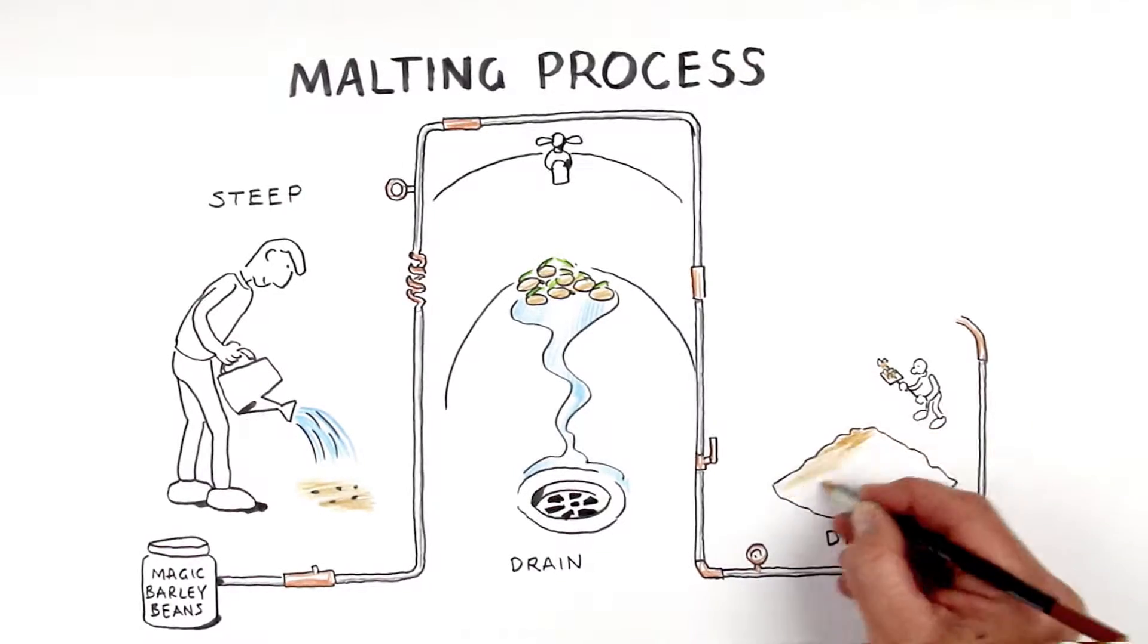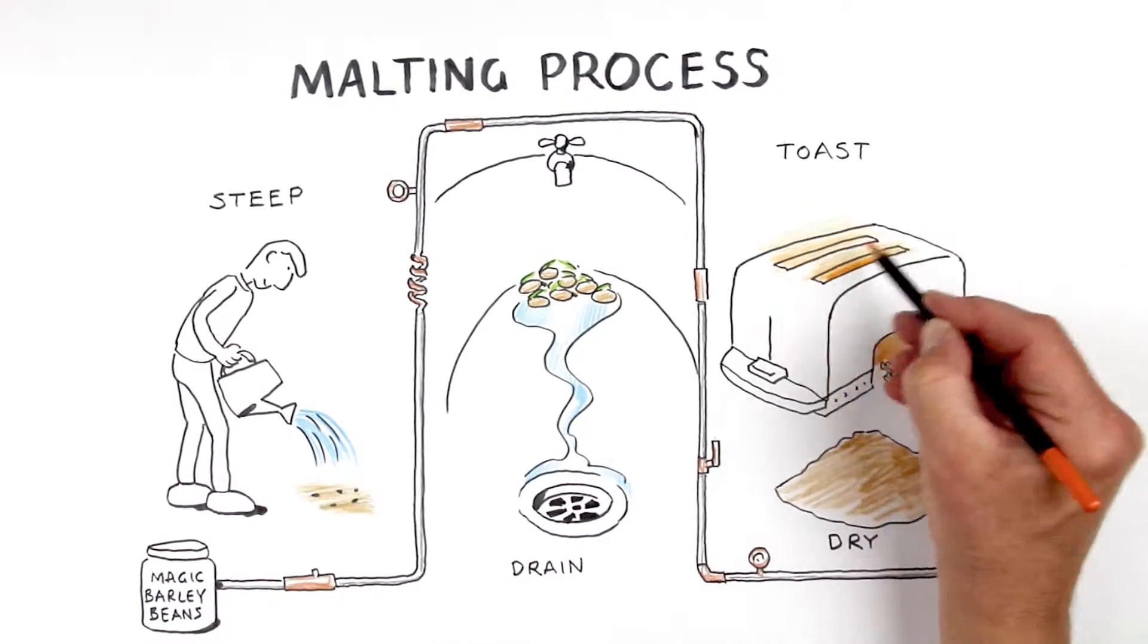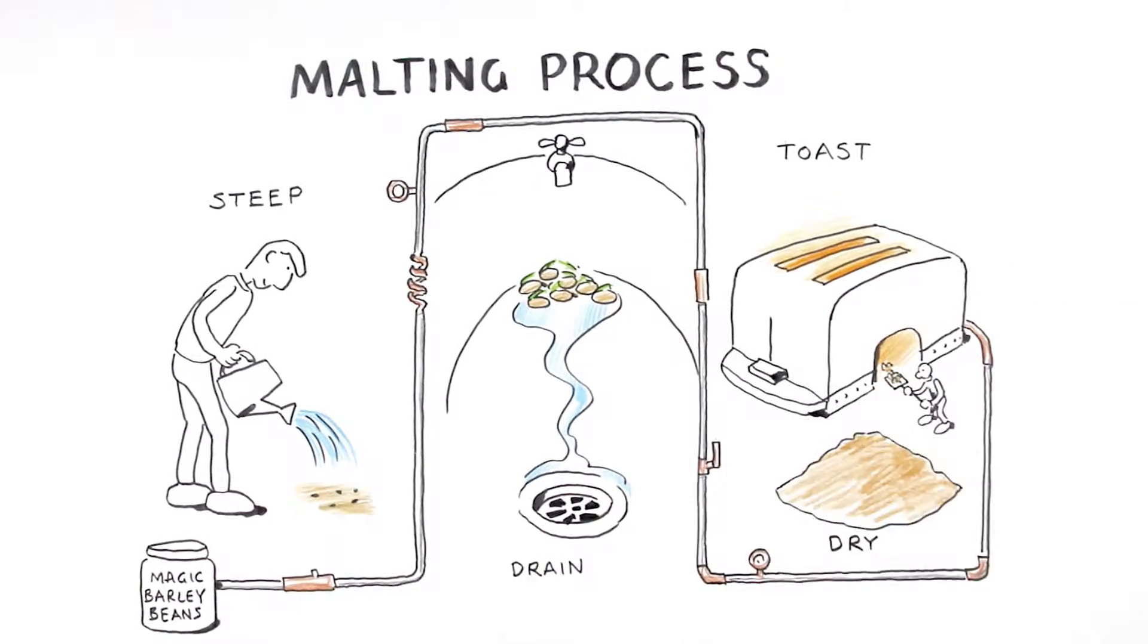Finally, we dry the barley to stop it germinating and kiln the barley to give it a lovely toasted flavour. The darkness and richness of the beer is dictated by how long we toast the barley for.